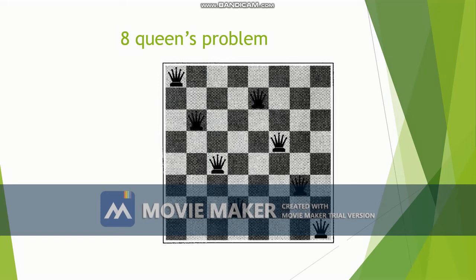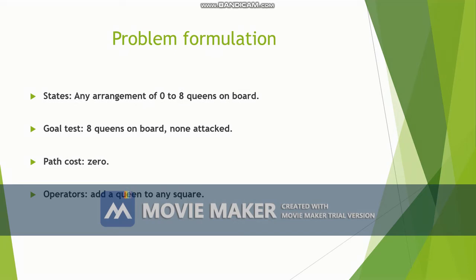The next problem is the 8-queens problem. This is a chess board problem where we need to arrange 8 queens such that none of the queens attack each other. The initial state may be any arrangement of zero to eight queens on the board — no queens, one queen, two queens, or all eight queens. The goal test is that all eight queens are on the board with none attacking each other.